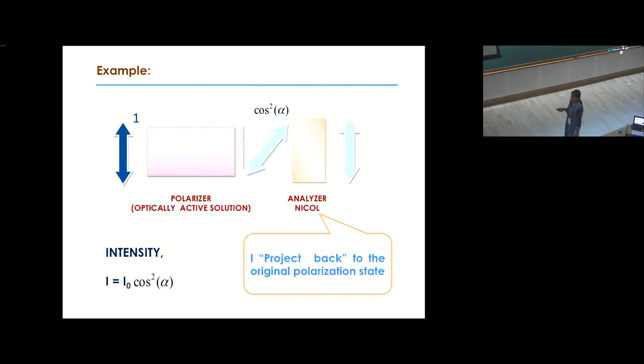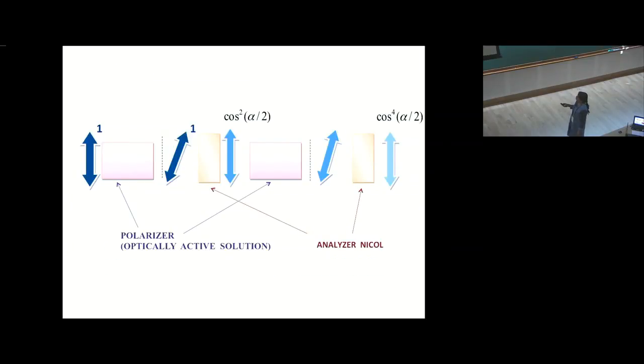This is the second example where we have vertically polarized light. If I allow it to pass through the polarizer, the intensity of final light will follow the usual cosine square law. I zero is the initial intensity and alpha is the angle by which the polarization plane changes. At the final stage, I have nickel analyzer which projects back to the original polarization state. Here I have only one such setup. What if I have two of them?